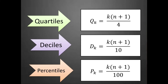The formulas we are going to use with the Mendenhall and Sinscih method are the following. For quartiles: Q sub k = k × (n + 1) / 4. For deciles: D sub k = k × (n + 1) / 10. For percentiles: P sub k = k × (n + 1) / 100. These formulas are similar to those used in linear interpolation.